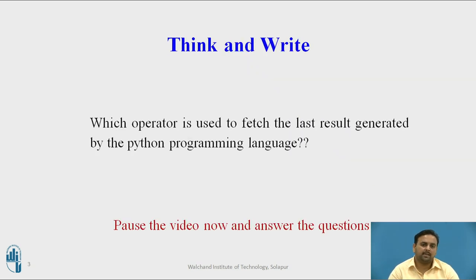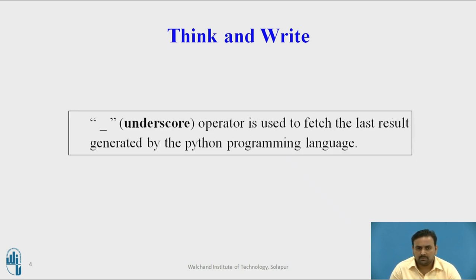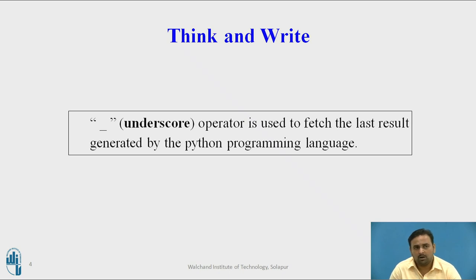There is one question for you: what is the operator used to fetch the last generated output in Python? Think about it and answer. The answer is the underscore operator, as we saw with integer addition — the underscore operator is used to fetch the last result generated by Python, and based on that you can perform any further operations.